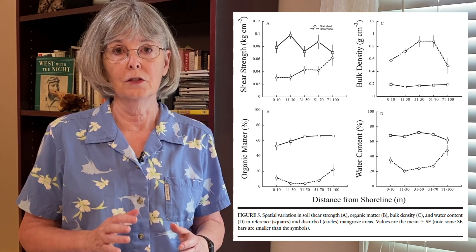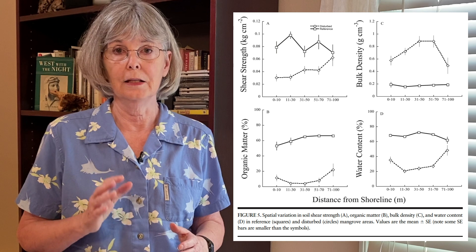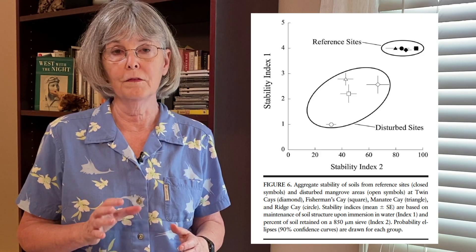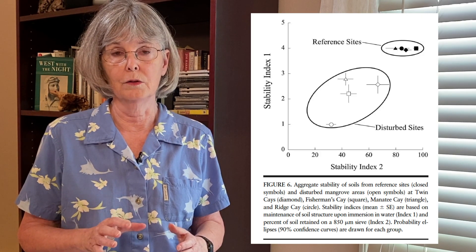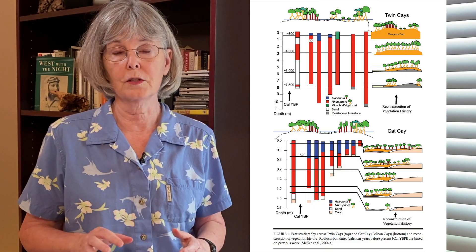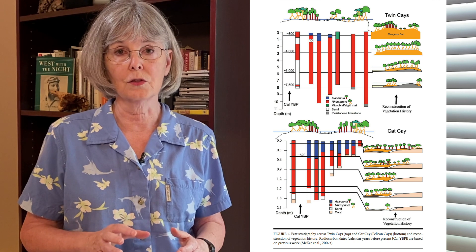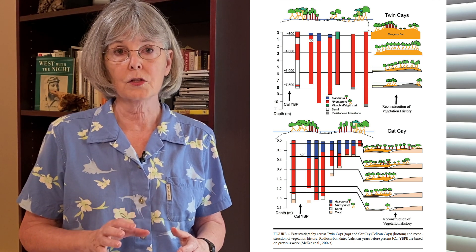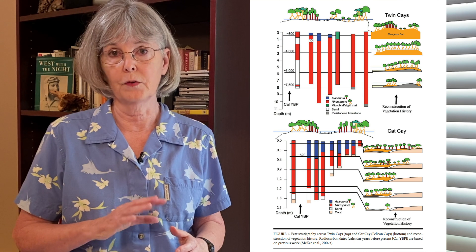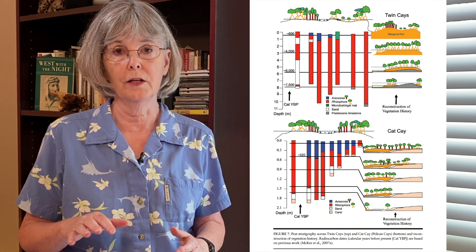Next I looked at the soil data collected at the five sites. I always graphed my data partly to find the best way to present it, but also to help me see if there is any aspect of the story I may be missing. Two figures clearly showed how much disturbed sites differed from reference sites in soil characteristics and that they were more vulnerable to soil erosion. A final figure, which showed the results of a coring campaign, was also key to the story. Undisturbed, these islands had kept pace with rising sea level for thousands of years through slow accumulation of peat.